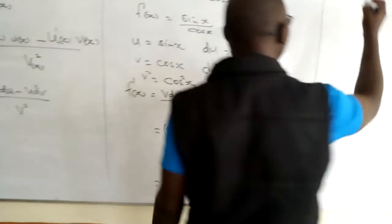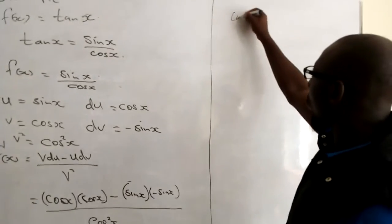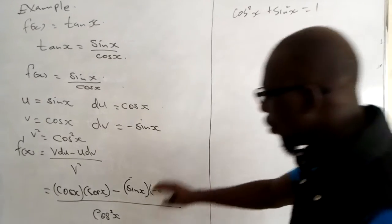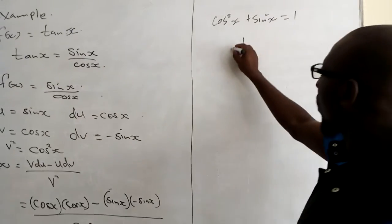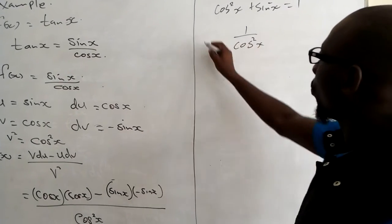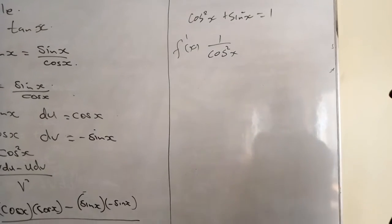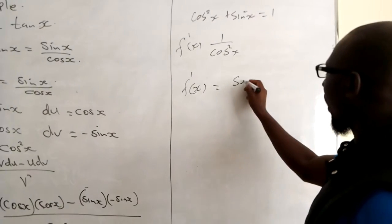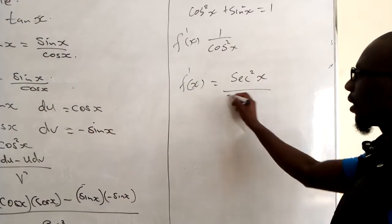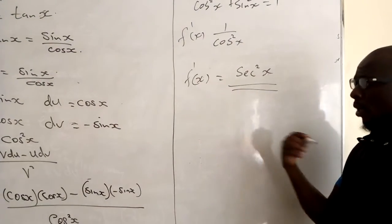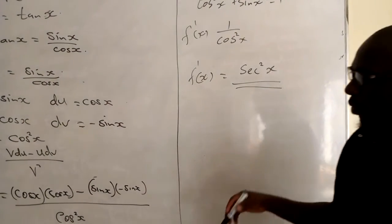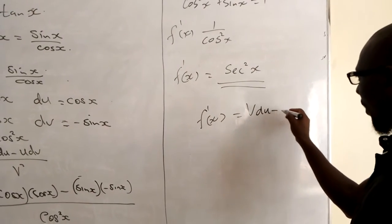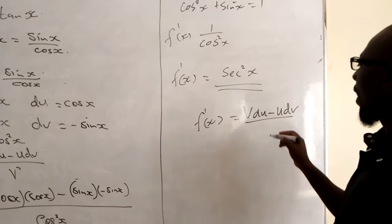From the first trigonometric identity, cos squared x plus sin squared x equals 1. So the numerator becomes 1, giving us 1 over cosine squared of x as our f prime of x. But 1 over cosine is called sec, so f prime of x can be written as sec squared of x as the derivative of tan x. You can practice other functions involving the quotient rule using the formula: f prime of x equals v du minus u dv over v squared.